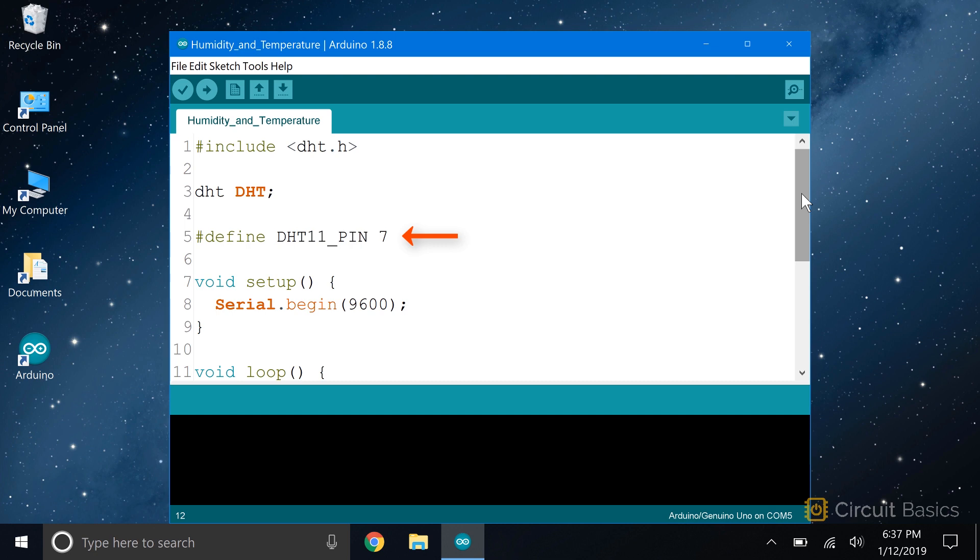HashDefine is executed by the precompiler, which happens before the main compiler runs. The precompiler searches the sketch for the defined name and replaces it with the value assigned to it. So in this case, every place the word DHT11_pin appears in the sketch, the precompiler will replace it with the number 7. If you're not careful, the precompiler could replace text you didn't want changed. Instead of using HashDefine, use the const variable qualifier. Declaring a variable with const int doesn't use up any RAM either, and it can prevent a lot of strange compiler errors.